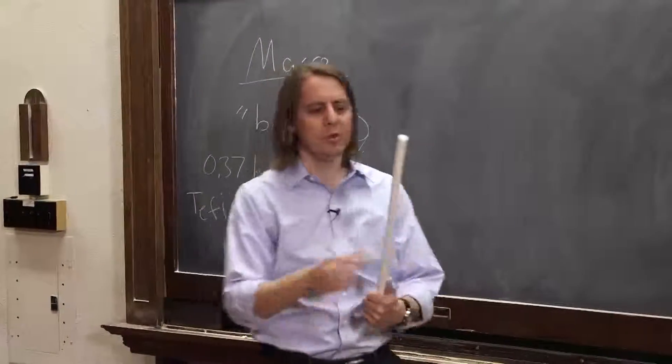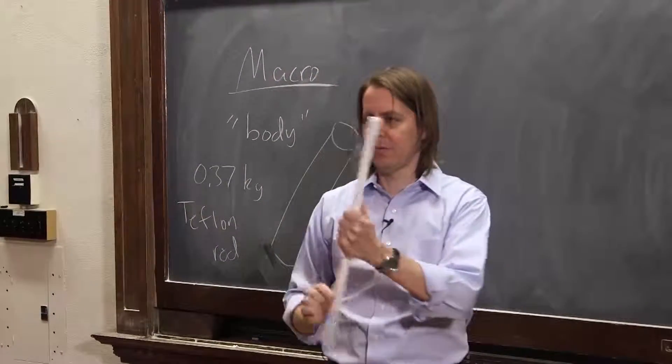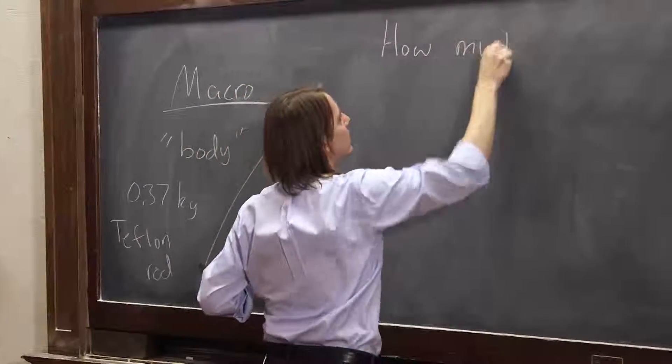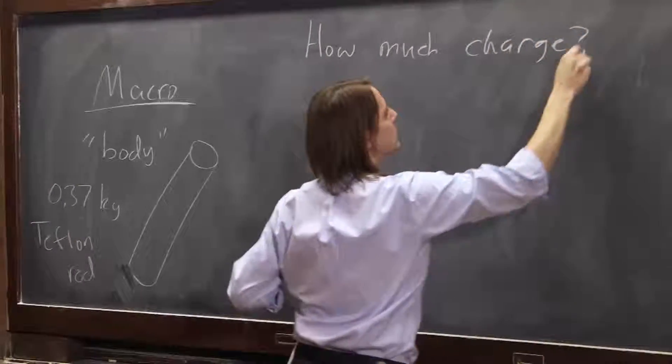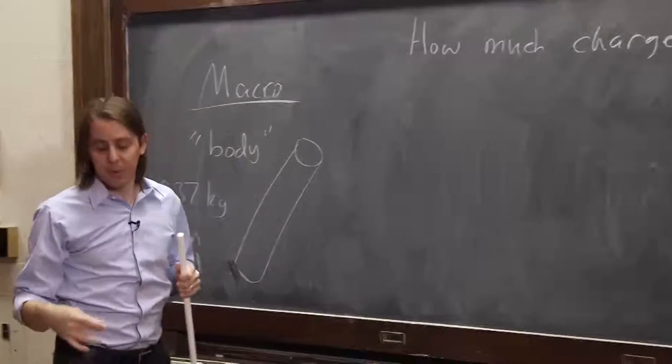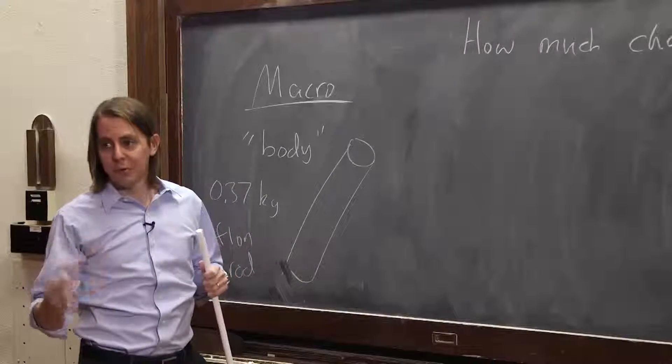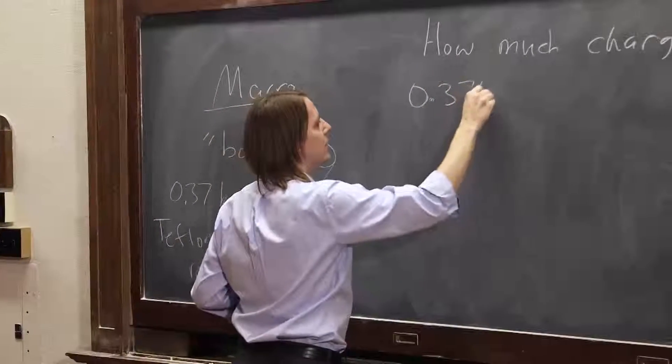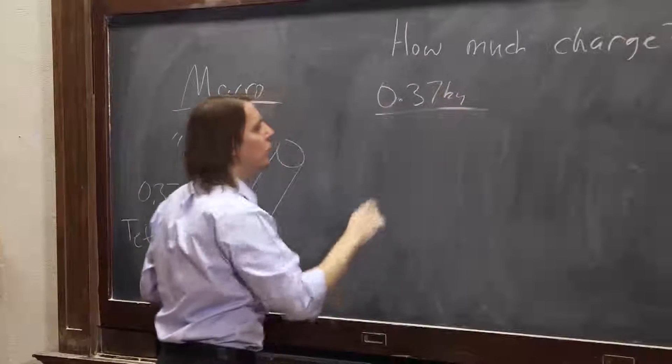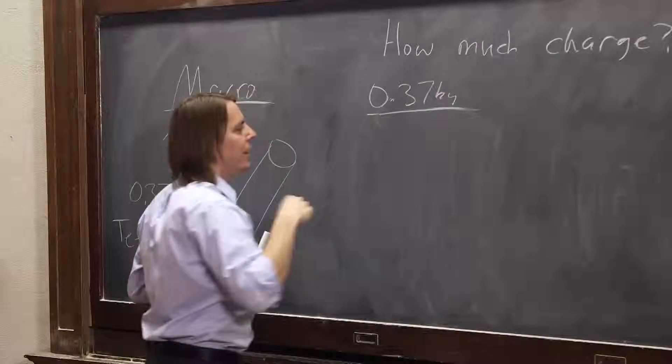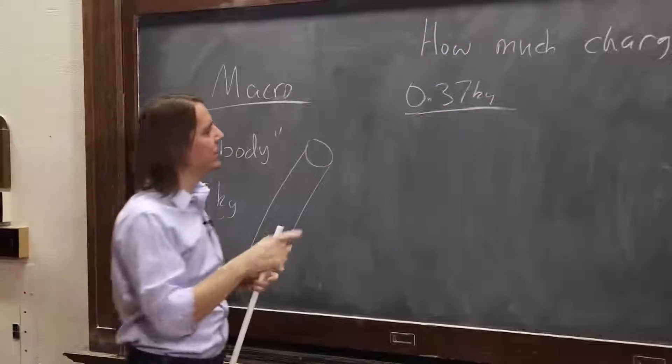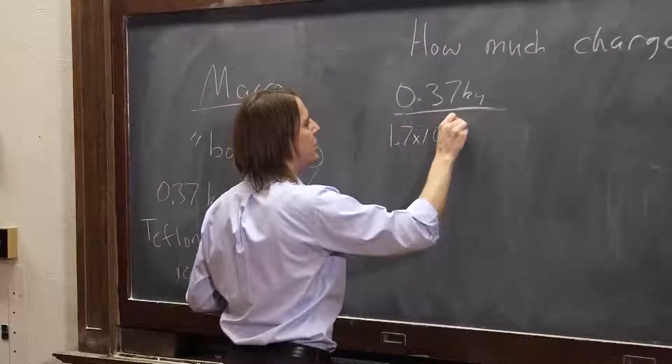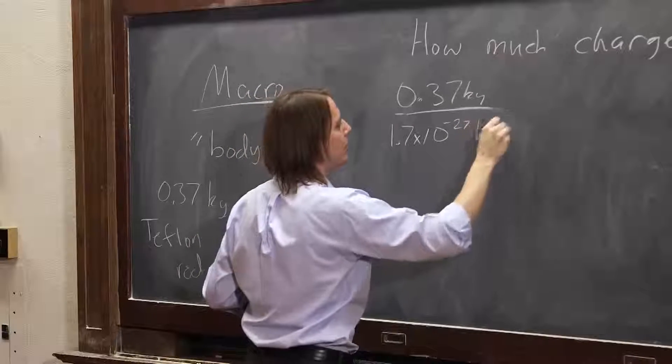So what's the first thing we want to do? Well, I guess if we want to think about charge in this rod, we simply say, how much charge does it have? And you can actually figure that out from what you already know from the micro scale of charge because you could say, okay, this thing weighs 0.37 kilograms. And we learned that the mass of charge was very small, 1.7 times 10 to the minus 27 kilograms per nucleon.